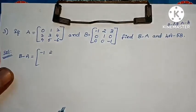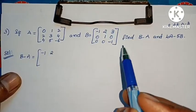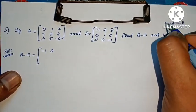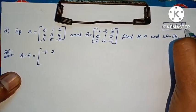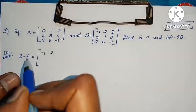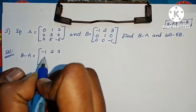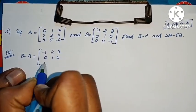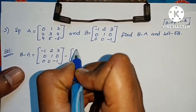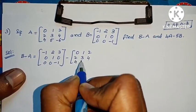Next problem: if A equals a matrix and B equals a matrix, find B minus A and 4A minus 5B. Note that B minus A is not equal to A minus B. Here B has elements: minus 1, 2, 3, 0, 1, 0, 0, 0, minus 1. Minus A has elements: 0, 1, 2, 3, 4, 4, 5, minus 6.